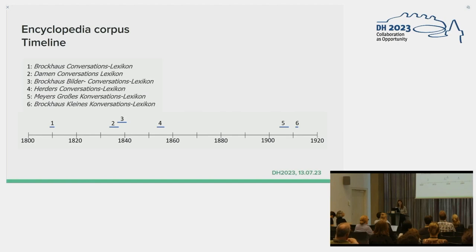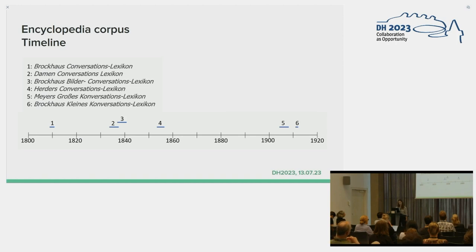From another perspective, this is what the corpus looks like on a timeline. As you can see, we are dealing with a considerable gap in the second half of the 19th century, and our corpus only picks up after 1900. This is just another limitation to keep in mind when looking at all results.